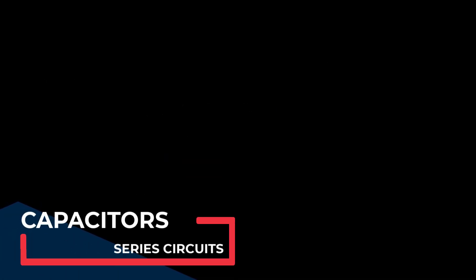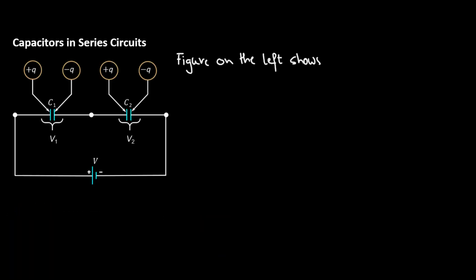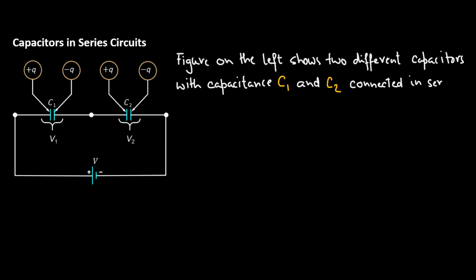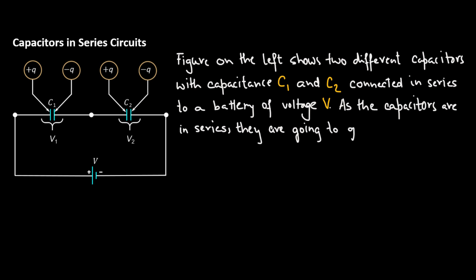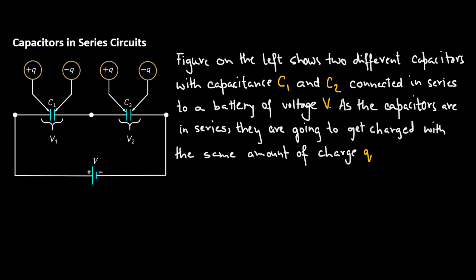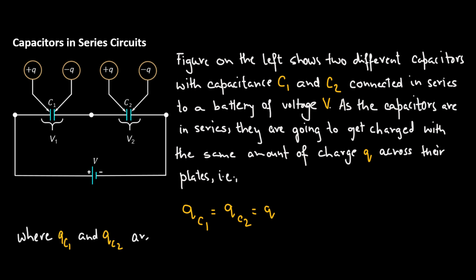Capacitors in Series Circuits. The figure on the left shows two different capacitors with capacitance C1 and C2 connected in series to a battery of voltage V. As the capacitors are in series, they are going to get charged with the same amount of charge Q across their plates. That is, the charge developed across the plates of C1 equals the charge developed across the plates of C2, where QC1 and QC2 are the charges stored in C1 and C2 respectively.